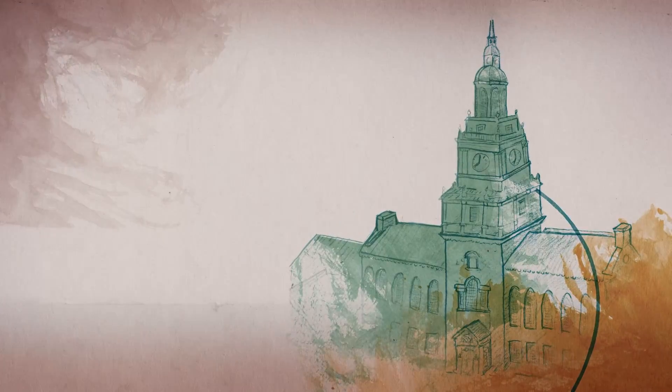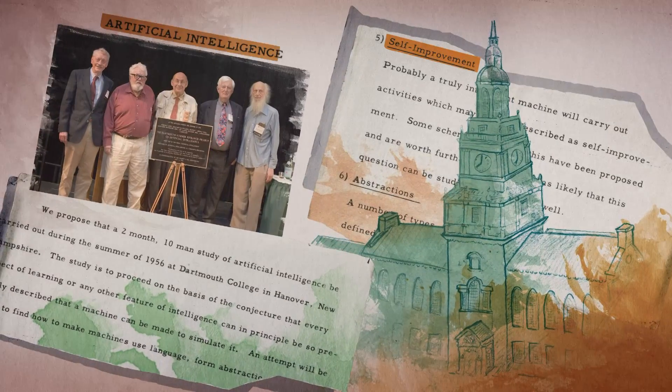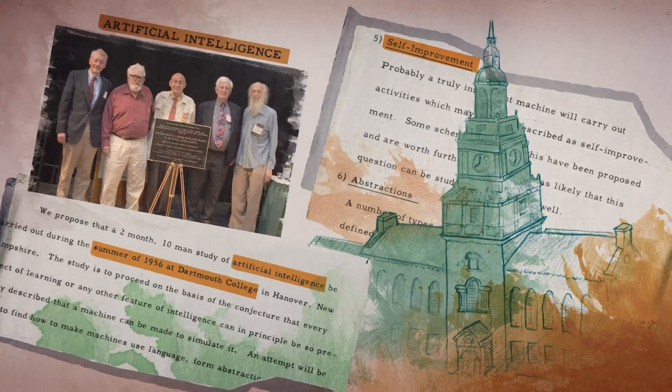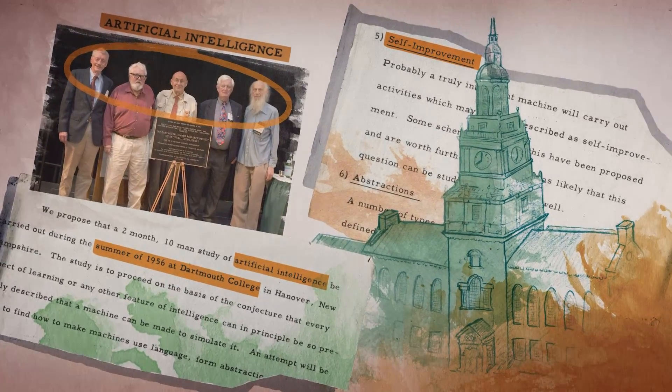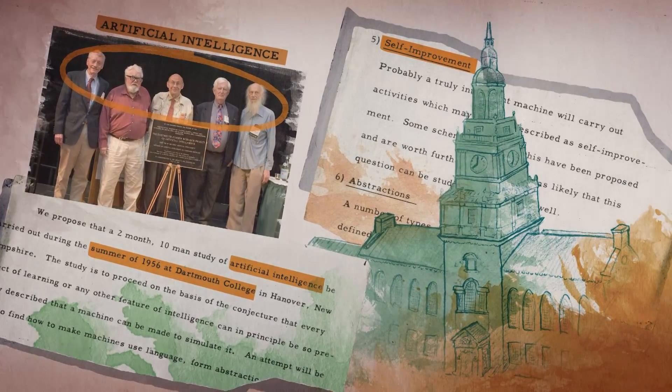The term artificial intelligence itself was established at a Dartmouth conference in 1956, where computer scientists came together to discuss how a machine could demonstrate the ability to learn.